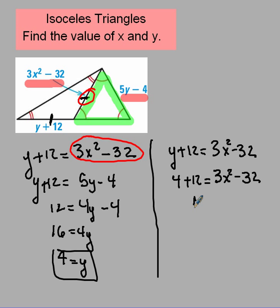So that's going to give me 16 is equal to 3x squared minus 32. When I add 32 to both sides, then we'll end up with 48 for 3x squared. Now, I've got to divide both sides by 3, and that's going to give me 16.